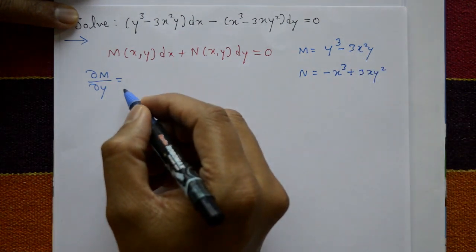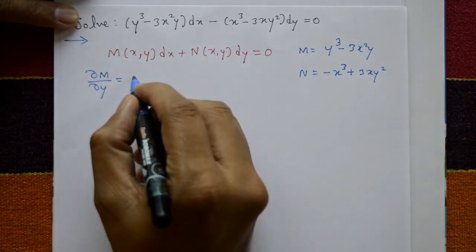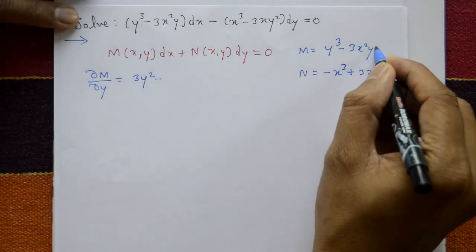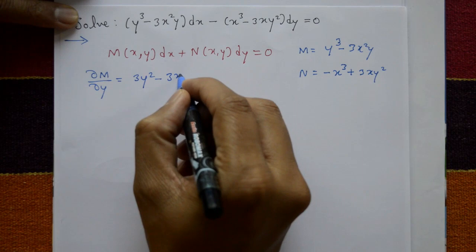Differentiate M with respect to y. With respect to y is 3y square minus 3x square is constant. Y become 1, so it's 3y square minus 3x square.